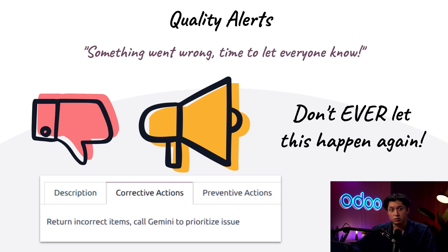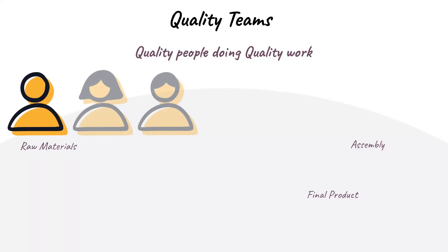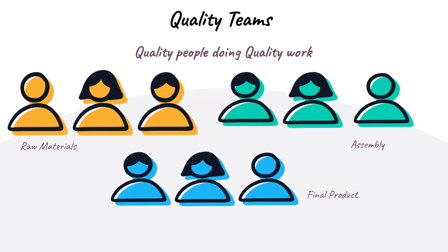Not only does this assist with managing quality assurance issues, but it also provides an opportunity for employees to contribute directly to the improvement process — after all, who knows better than someone directly involved in the process every day? Similarly, the quality app allows you to create dedicated quality teams to handle various quality checks. Different teams can be assigned an email alias for notifications and configured to manage specific alerts as necessary.